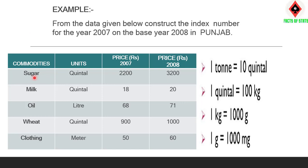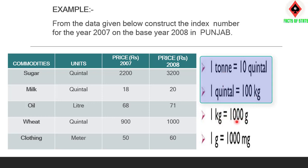A table is given with commodities: sugar, milk, oil, wheat, clothing — with units in quintal. Note: 1 ton equals 10 quintals, 1 quintal equals 100 kg, 1 kg equals 1000 grams, 1 gram equals 1000 mg. From the data given below, construct the index number for the year 2007 on the base year 2008 in Punjab. The base year is 2007 (P0) and current year is 2008 (P1).